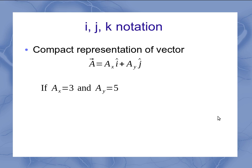So for example, if ax was 3 and ay was 5, when I put that together, I could represent this vector more compactly as the vector a is 3i hat plus 5j hat. Or the x part, which always goes with i, is 3, and the y part, which always goes with j, is 5.